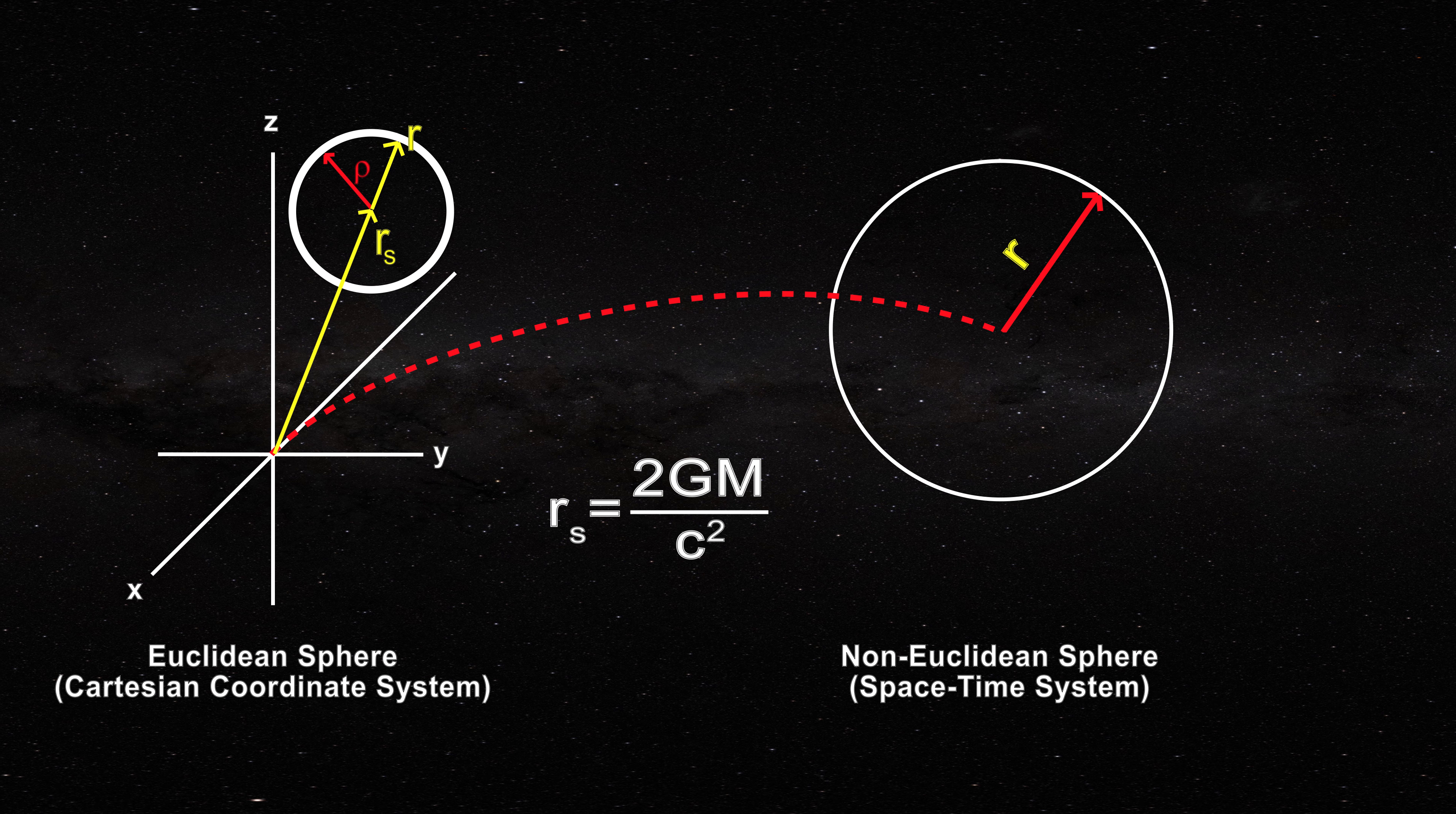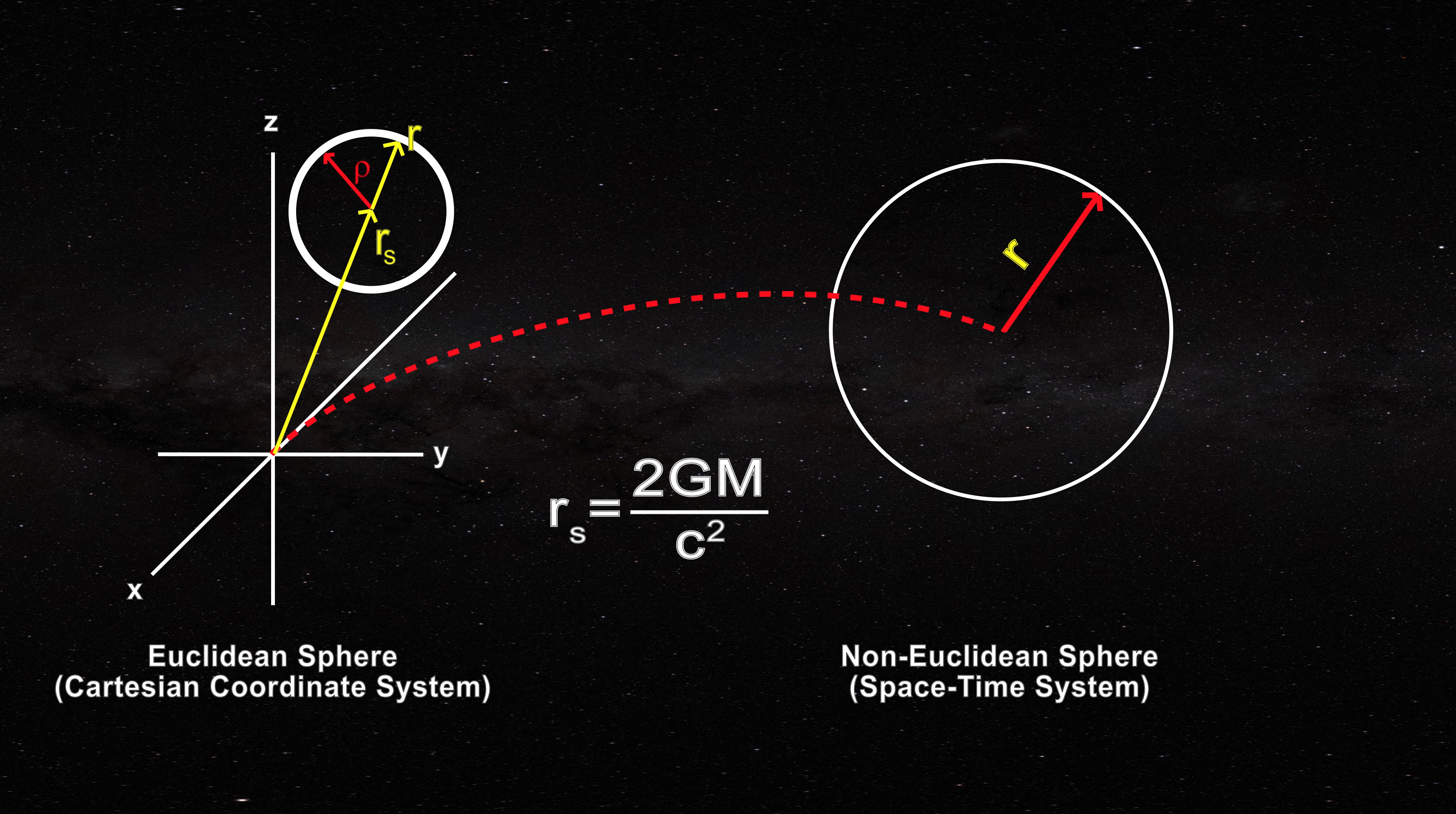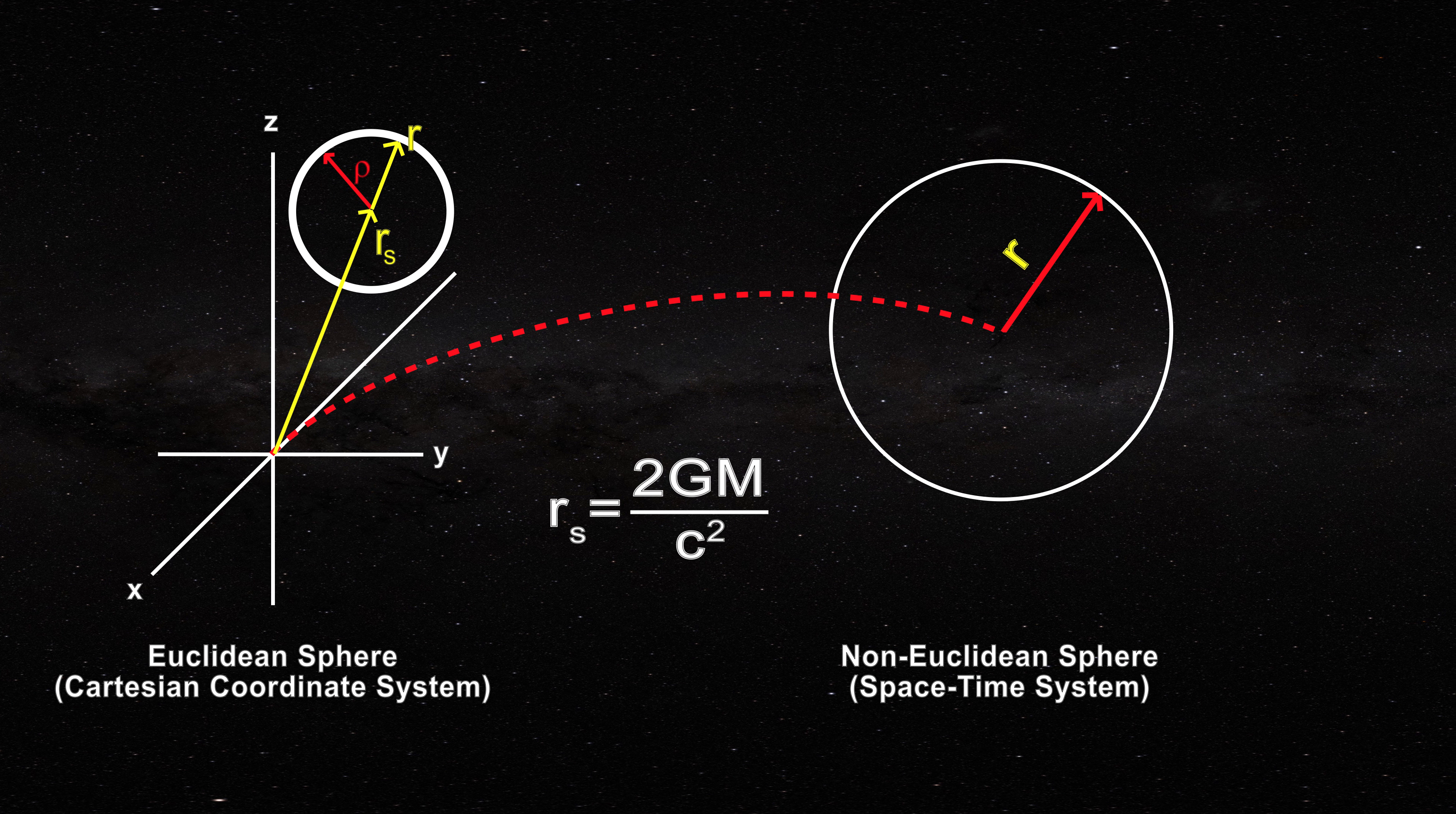In effect, black hole theory unwittingly moves the Euclidean sphere away from its origin of coordinates, but leaves its center behind, in violation of elementary geometry.